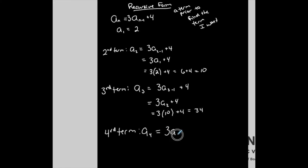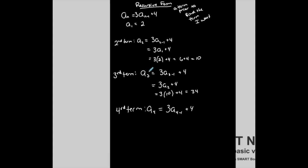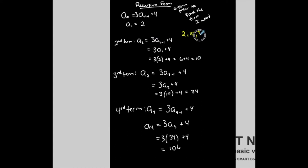a₄ is three times a₄₋₁ plus four, which simplifies to three times a₃ plus four. I need the third term to get to the fourth term, and I just determined the third term was thirty-four. So three times thirty-four plus four is one hundred six. So the first four terms are: two, ten, thirty-four, one hundred six. The thing about recursive formulas is that if I want the hundredth term, I'm going to need the ninety-ninth term — that's the unfortunate part of the recursive form.